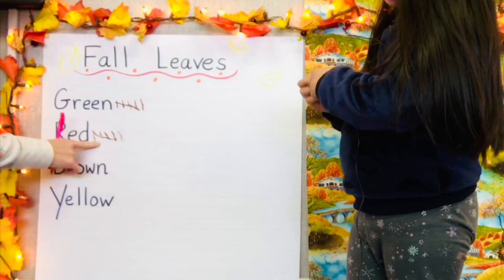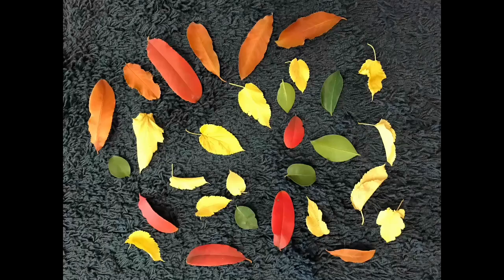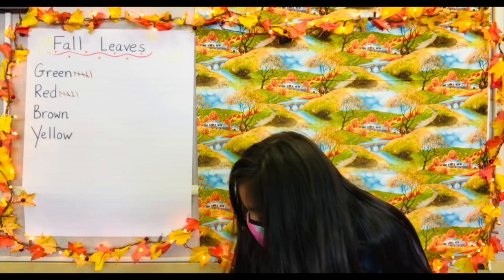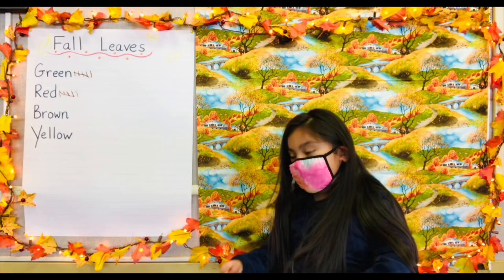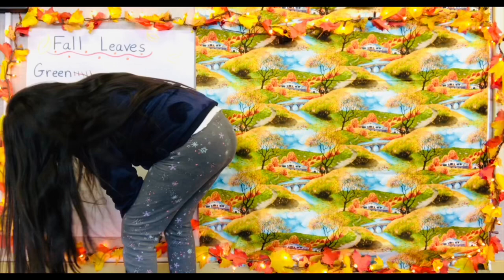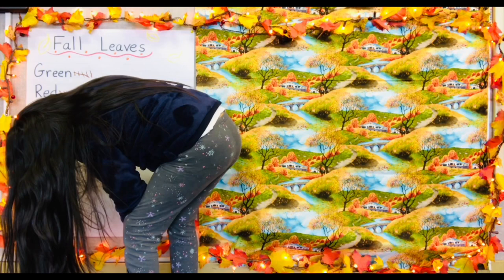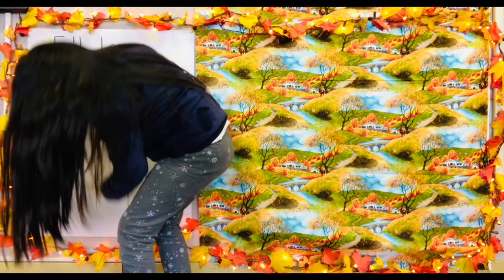The next thing I want you to do is count up the number of brown leaves. One, two, three, four, five, six. Yep, that's what I count too. Go ahead and make the number six next to brown. One, two, three, four — don't forget, go across for five — six. There you go. And then if your crayon is getting kind of short, we could twist it up like that — then you get more crayon.